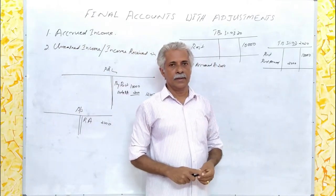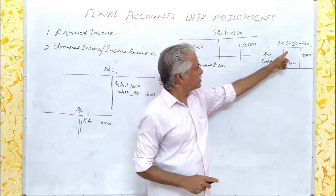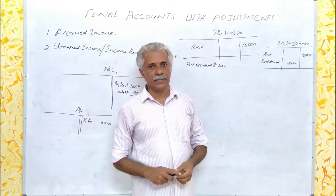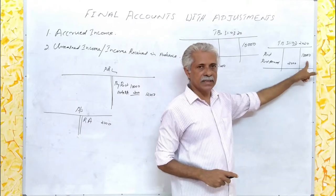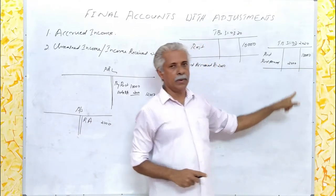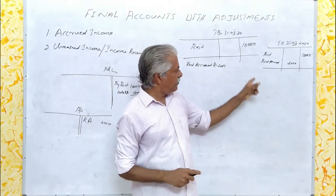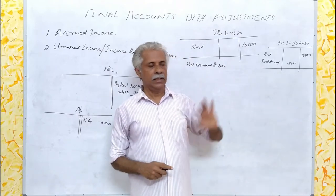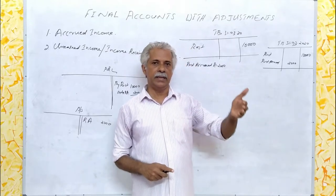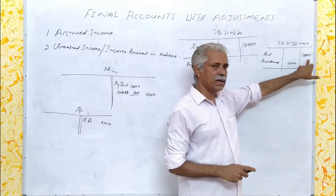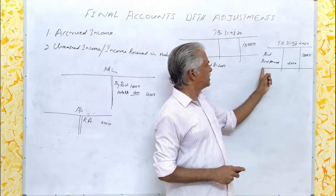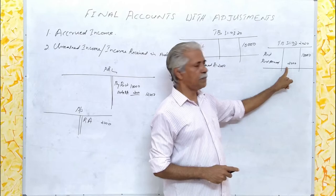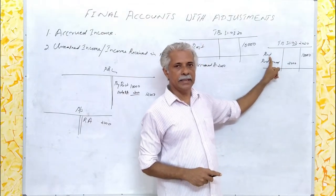In the second case, a trial balance is given on 31st March 2020 wherein two items are given: rent with a credit balance of rupees 10,000 and rent accrued with a credit balance of rupees 2,000. Whenever rent accrued appears in the trial balance, it implies that that amount is already added to the rent received. So this rupees 10,000 is inclusive of the rent accrued rupees 2,000. Therefore, there is no need for further addition of rupees 2,000 to the rent in the P&L account.